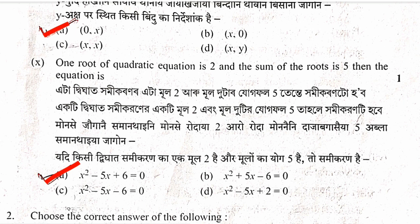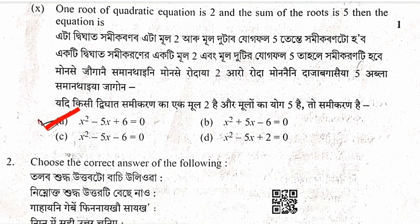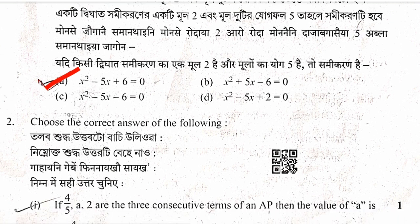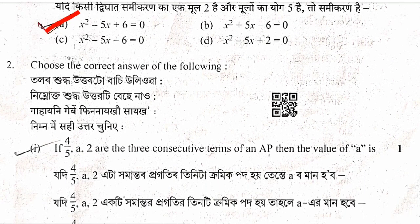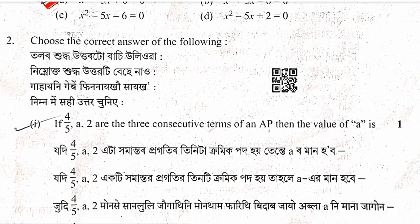Tenth question: One root is 2 and the sum of the two roots is 5, therefore the other root is 3. Therefore x minus 2 multiplied by x minus 3 gives the quadratic equation x squared minus 5x plus 6 equals zero.